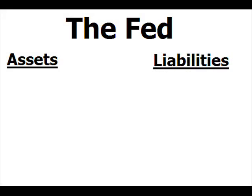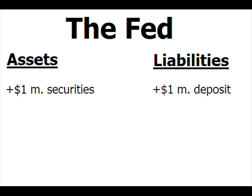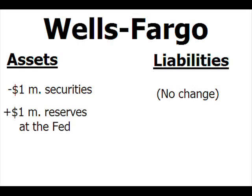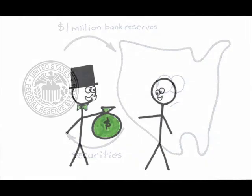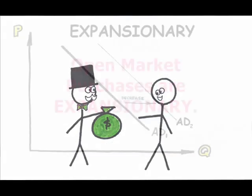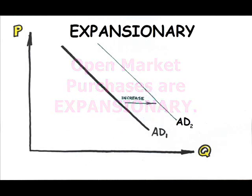The Fed sees a change in its asset mix as it increases its holdings of securities and decreases its holdings of cash, depositing $1 million into Wells Fargo's account. Wells Fargo also sees a change in its asset mix, with $1 million less in government securities but $1 million more on deposit with the Fed. The big difference is that $1 million in securities can't be loaned out, but $1 million in bank reserves — or at least some fraction of it — can be lent out. With the open market purchase, the Fed has injected $1 million into the economy, plus whatever additional effect from the lending of the excess reserves, making this expansionary policy.